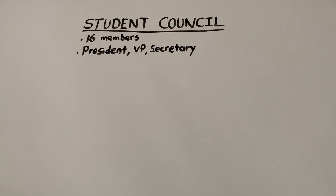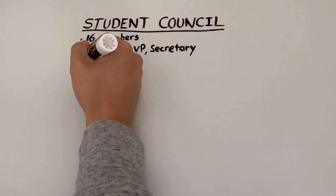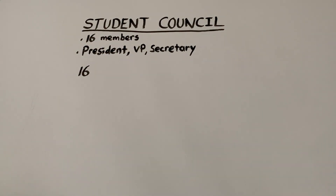We can approach this problem in the same way we've done all our other counting problems — going back to the basic concept of choices and selections. We can focus on the president first. Any one of the 16 members has a shot at becoming president, so there are 16 choices for the president. Once a student has been chosen president, they aren't allowed to be vice president or secretary because they've already taken the job of being president.